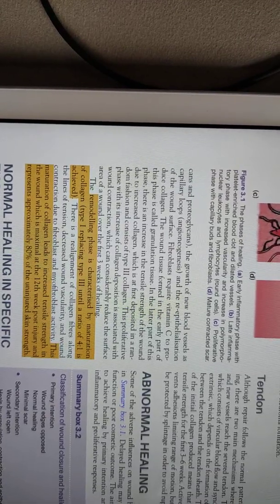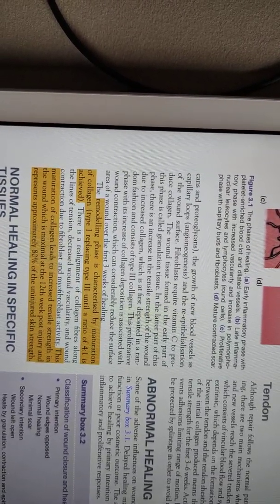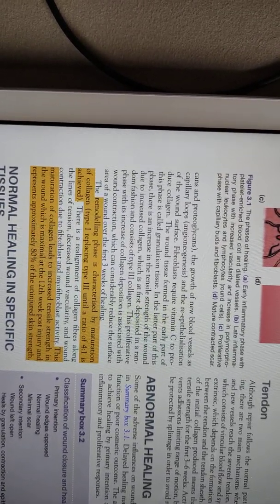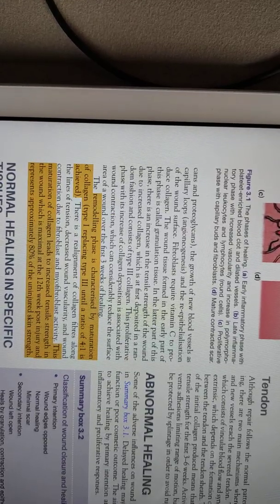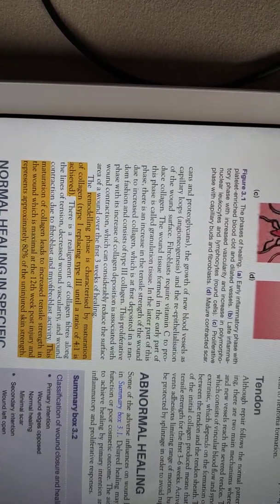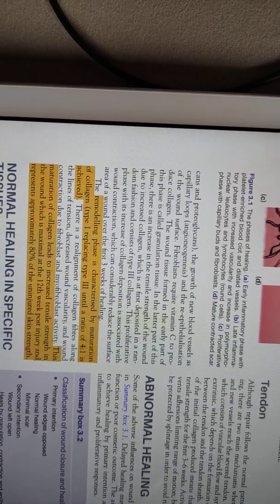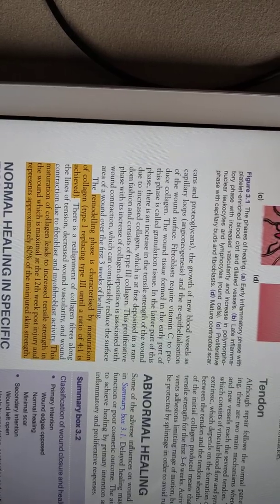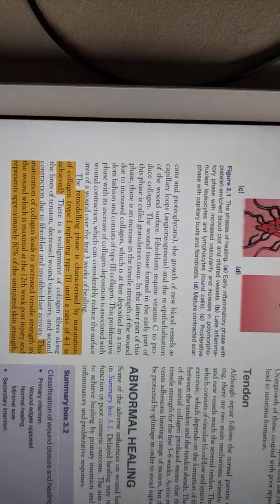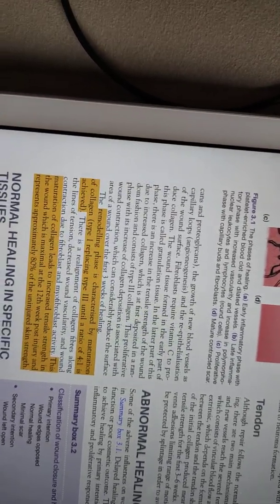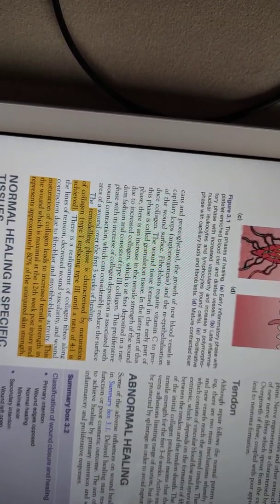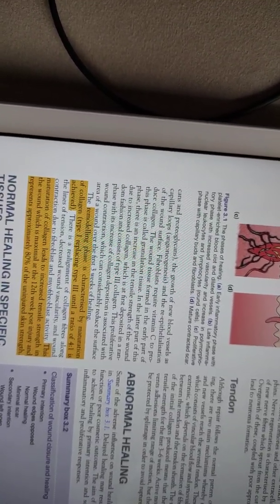The immature collagen is type 3 collagen. This is followed by the remodeling phase, in which type 3 collagen is converted into type 1 collagen, which is the definitive type, in a ratio of type 1 to type 3 of 4:1. This maturation leads to increased tensile strength, with maximal strength obtained at around 12 weeks, achieving 80% of normal strength.